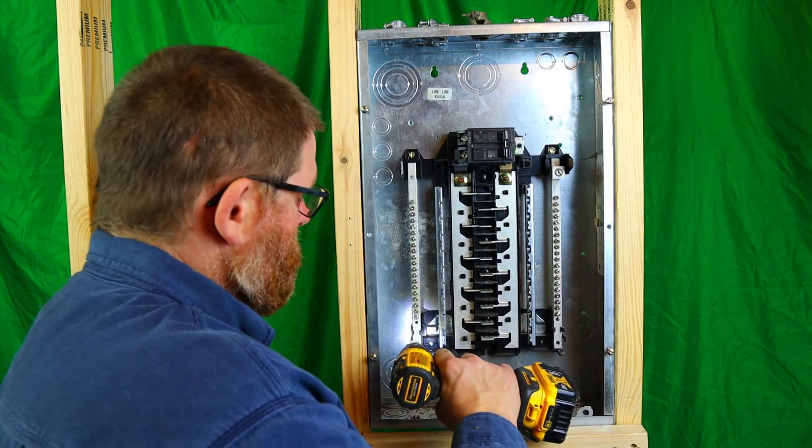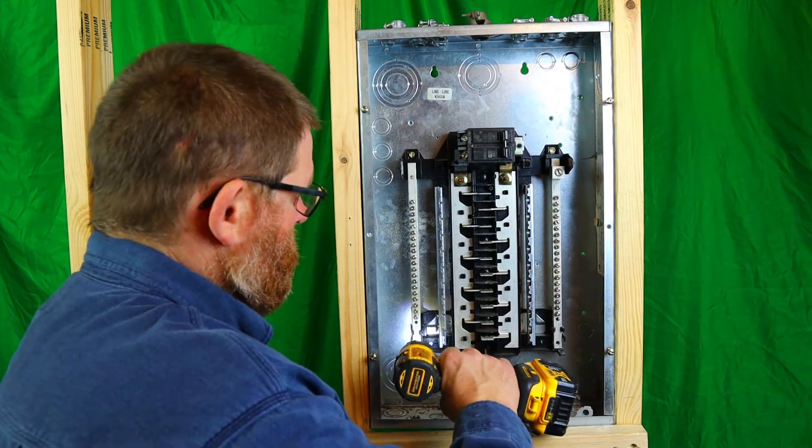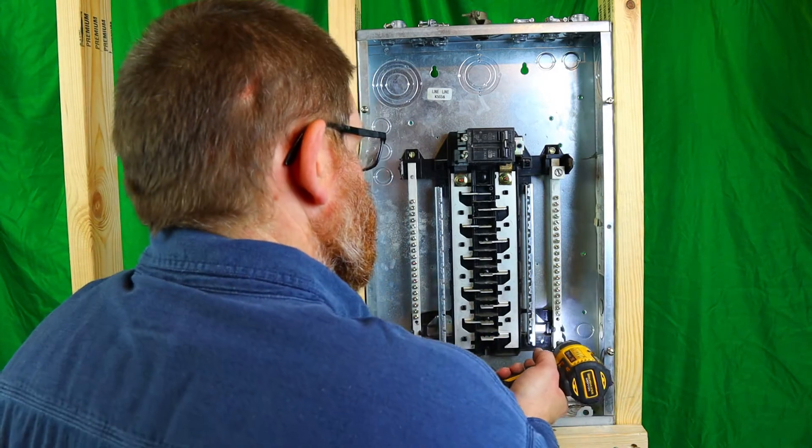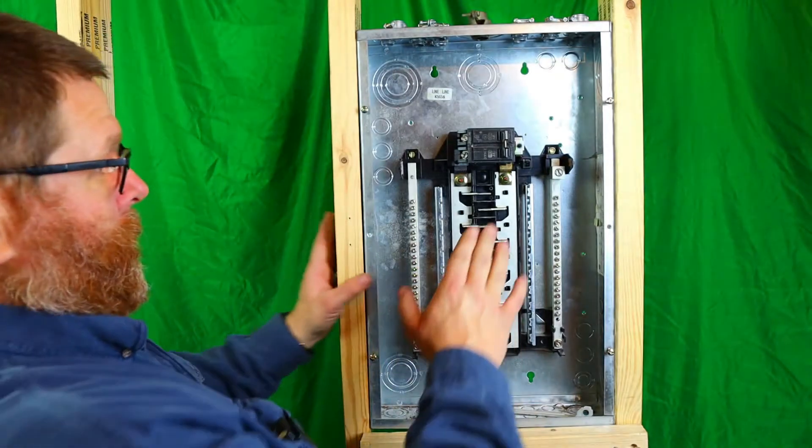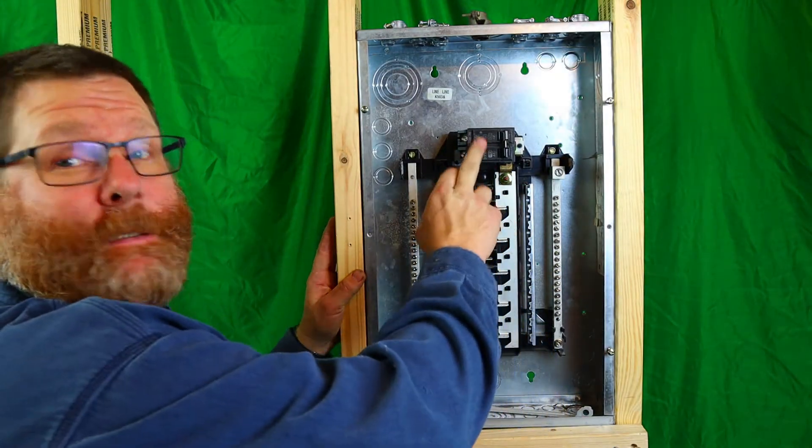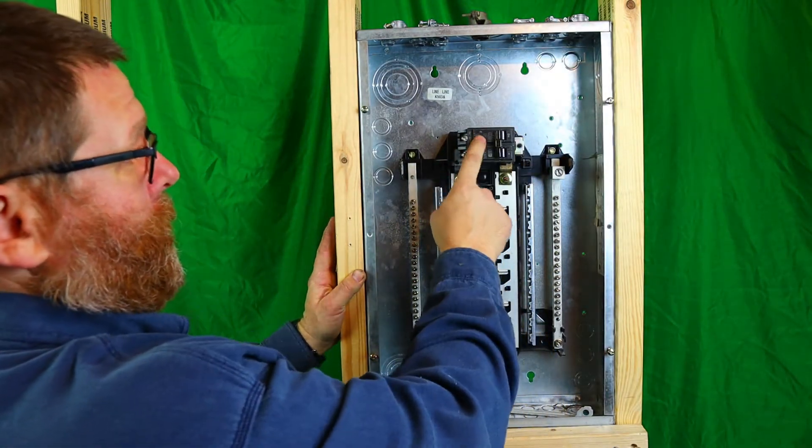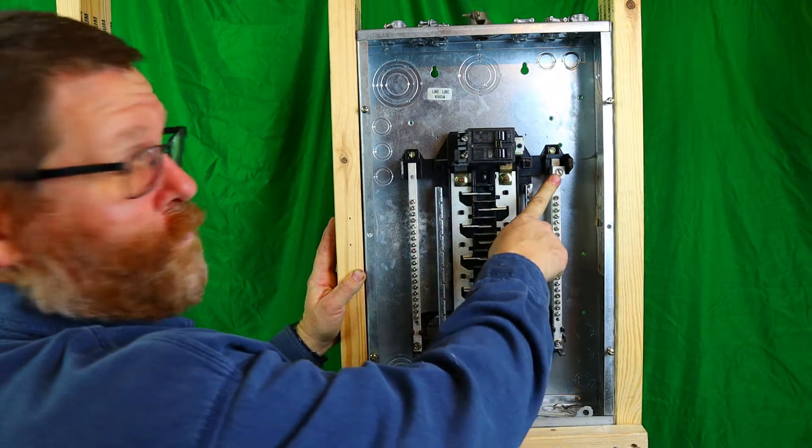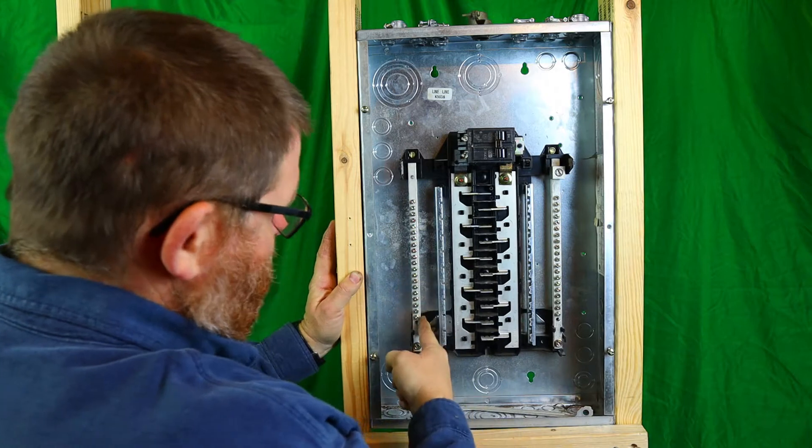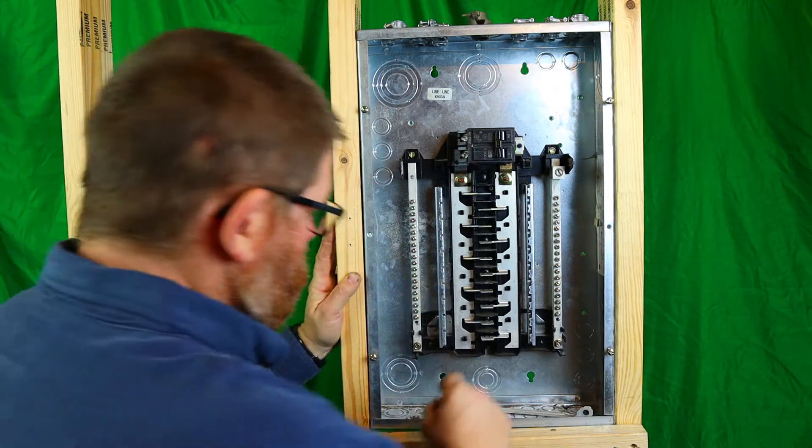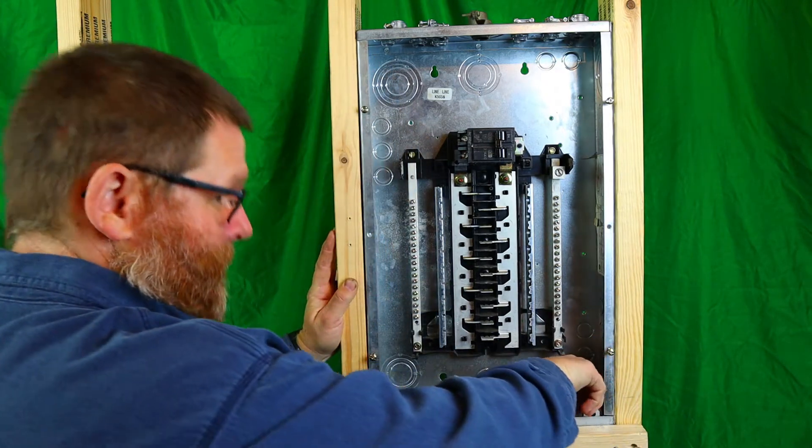Now on this panel right here guys, this is where your hots come in at, so this is your main breaker. This is your neutral bar because it has the bigger lug on it. This is your ground bar.